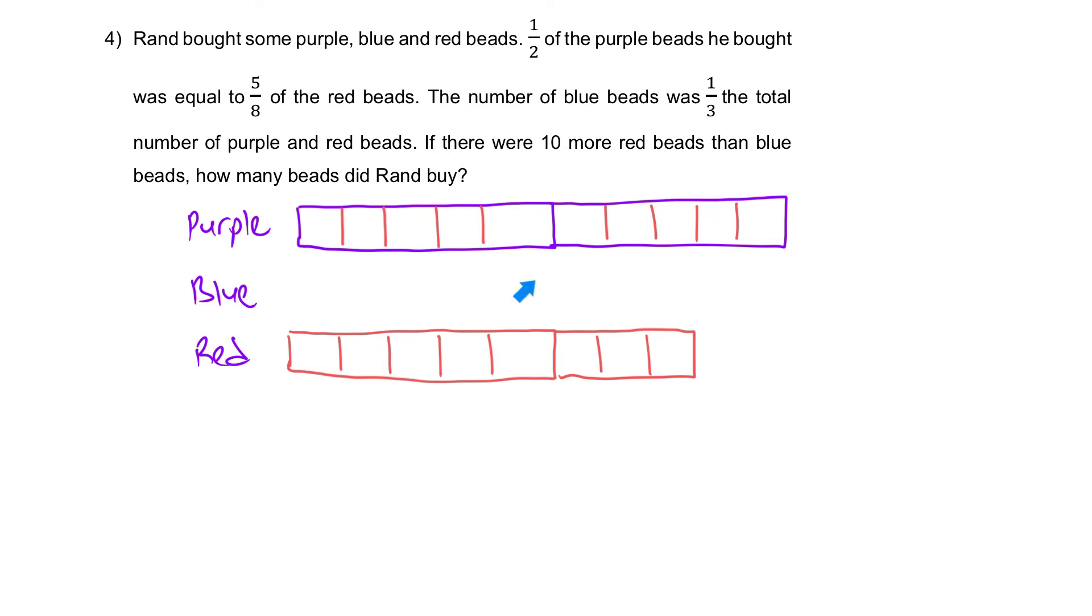Next, the number of blue, it's a third of the total number of purple and red. Now how many purple and red are there? So purple, we have 10 units. Red, we have eight units. So in total, they have 18. So if blue beads is a third of it, what is a third of 18? Six. So we can draw out six units. So five, six over here. One, two, three, four, five, six. Six units. Then we are done.